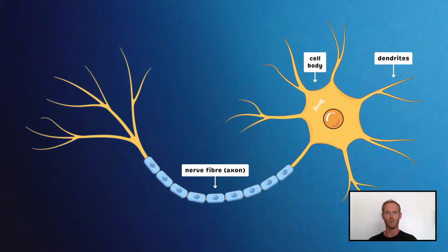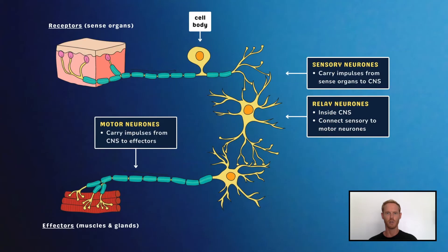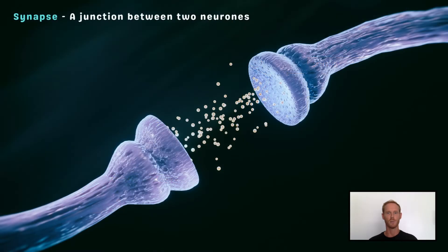Each neuron has a cell body containing a nucleus, fibres called dendrites that branch outwards to make contact with other neurons, and a long nerve fibre called an axon. Sensory neurons are distinguishable from motor neurons as the cell body is located in the middle of the axon. Relay neurons are much shorter as their only role is to connect the other neurons together. Junctions between neurons where the impulse is passed from one neuron to another are called synapses.